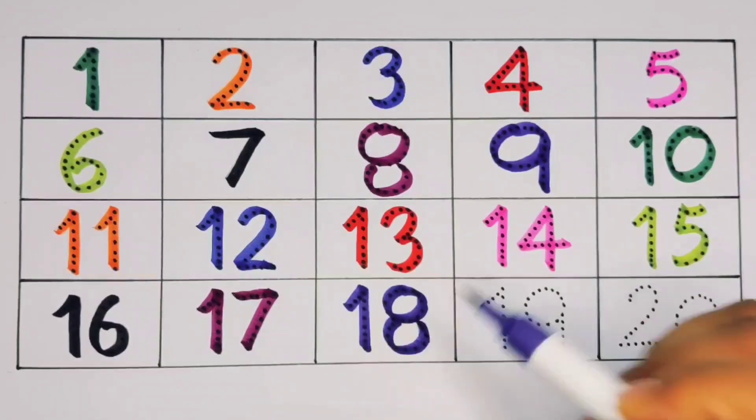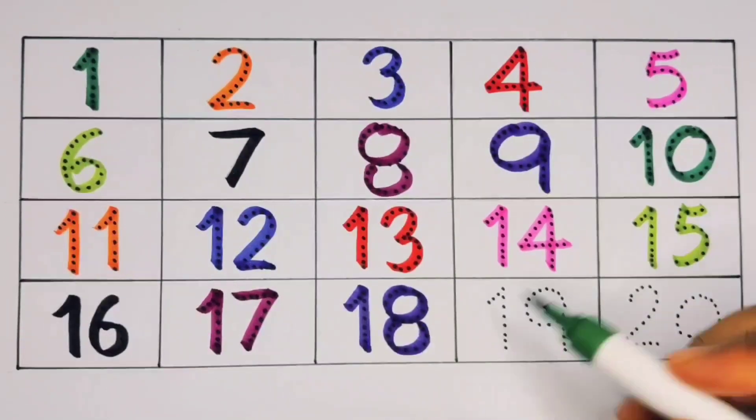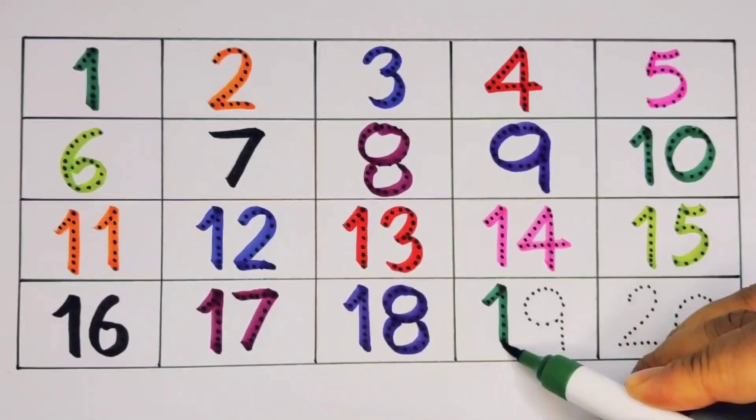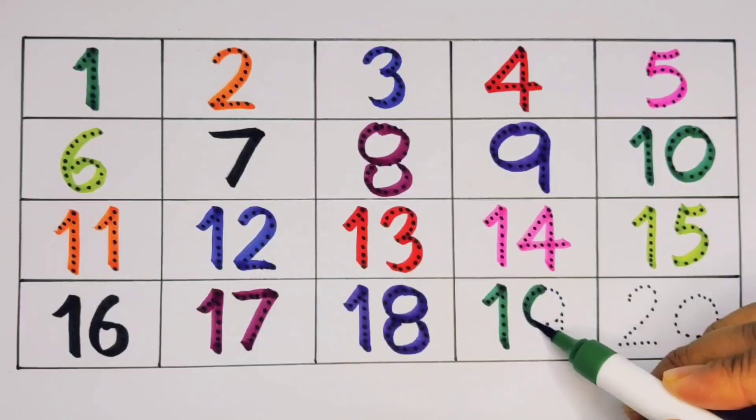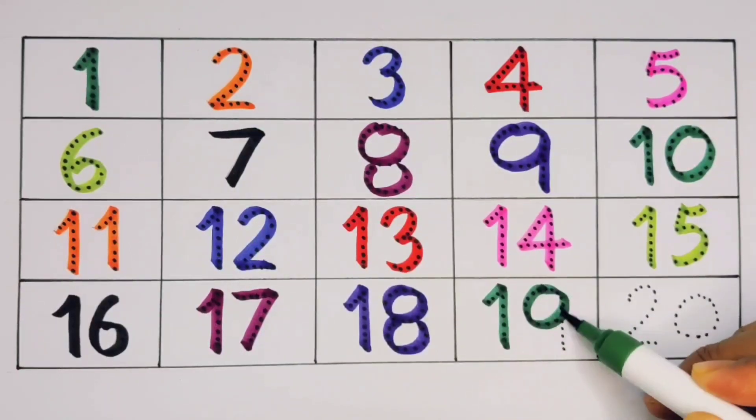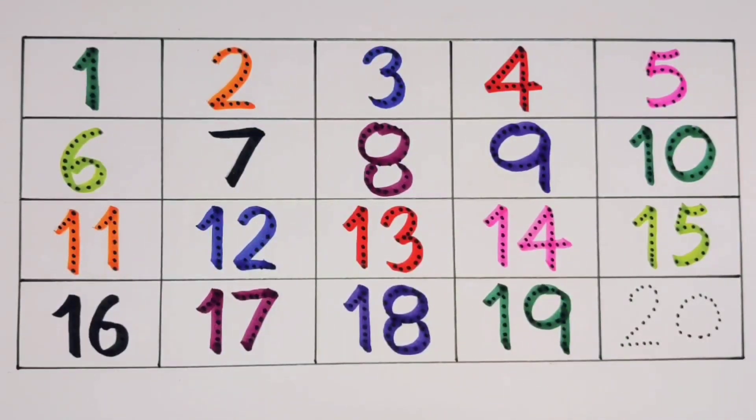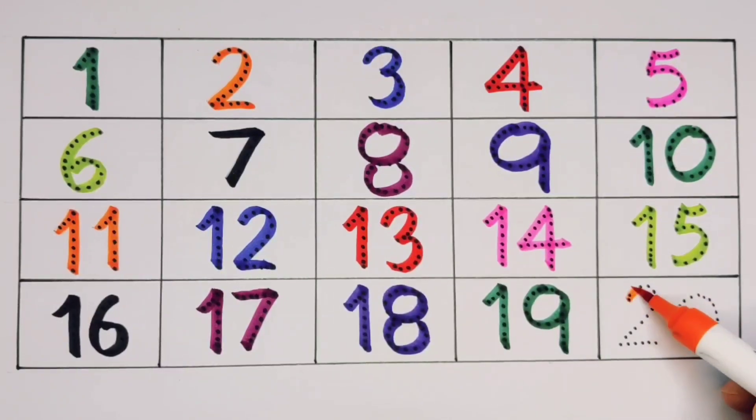What will next kids? It's nineteen, one nine, nineteen, number nineteen. Next, twenty, two zero, twenty, number twenty.